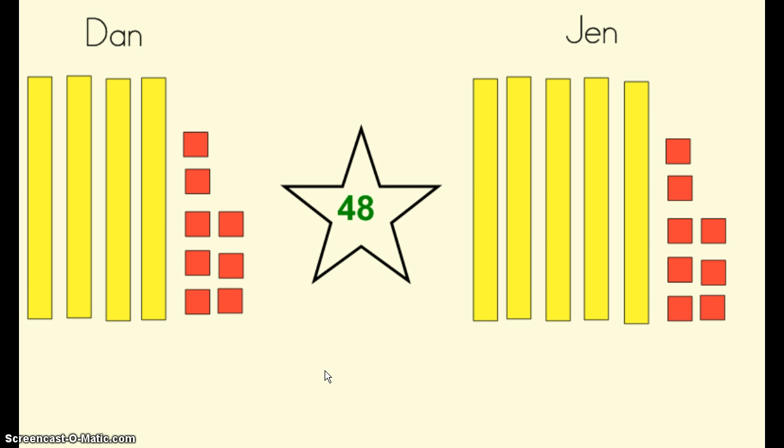Let's look at these two pictures. I asked Dan and Jen to make the number 48. Dan made the number 48 using four tens and eight ones. Jen made the number 48 using five tens and eight ones.